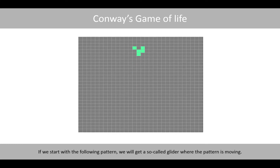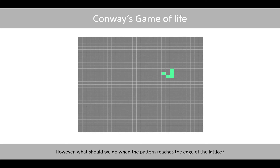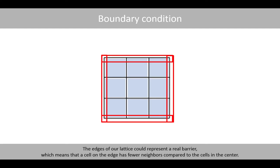If we start with the following pattern, we will get a so-called glider where the pattern is moving. However, what should we do when the pattern reaches the edge of the lattice? The edges of our lattice could represent a real barrier, which means that the cell in the edge has fewer neighbors compared to the cells in the center.